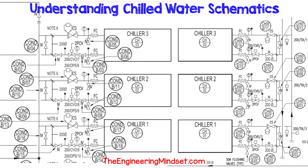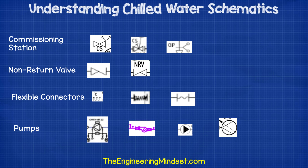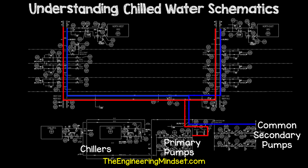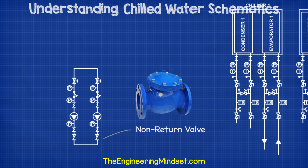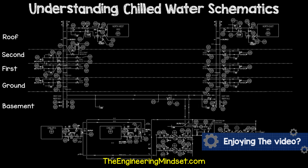Every schematic you look at will look completely different. The symbols used are always similar enough to recognize what they are, but they're always slightly different. However, they will all show how the chilled and condensed water system is connected and distributed around the building. They will also show the main components, such as the valves and pressure sensors, and they should also show which floor the components are located.